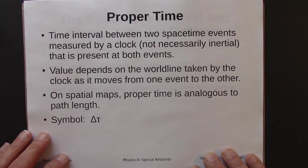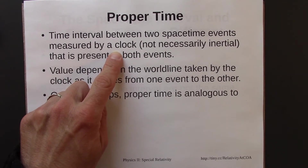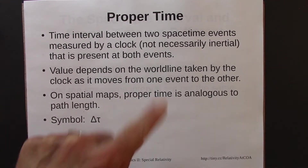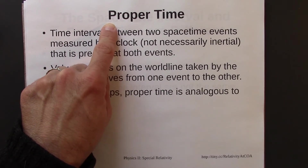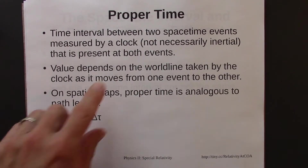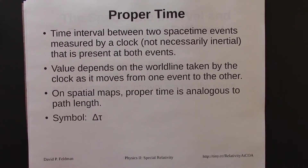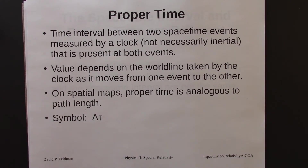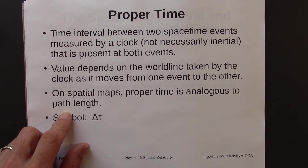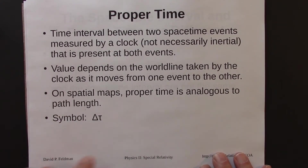Proper time is another type of time interval — a time interval between two space-time events measured by one clock present at both events, but that clock need not be inertial. It doesn't have to move at constant velocity; it could circle around, accelerate, or change directions. This is called proper time — proper in the sense of 'own,' being the property of that particular clock. Its value depends on the world line taken by the clock. On spatial maps, proper time is analogous to path length: there are many possible paths connecting two points, with different lengths. Likewise in space-time, a clock moving along different world lines would measure different time intervals. The standard symbol for proper time is delta tau.